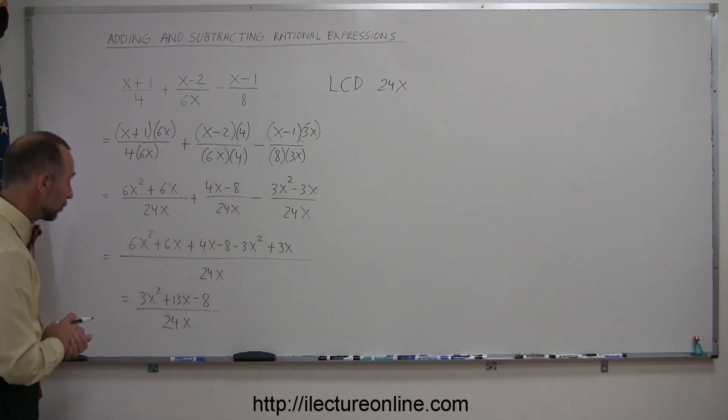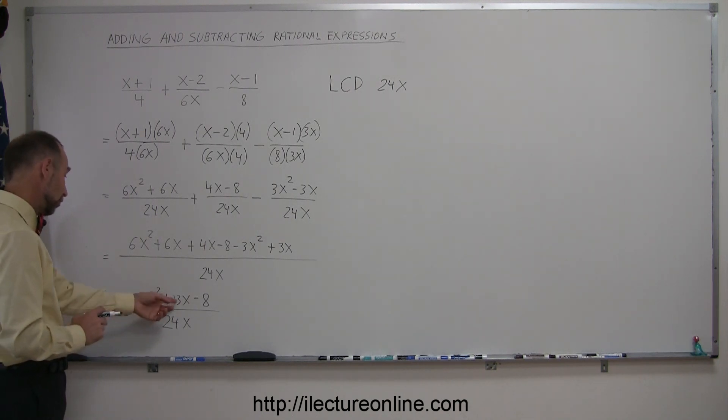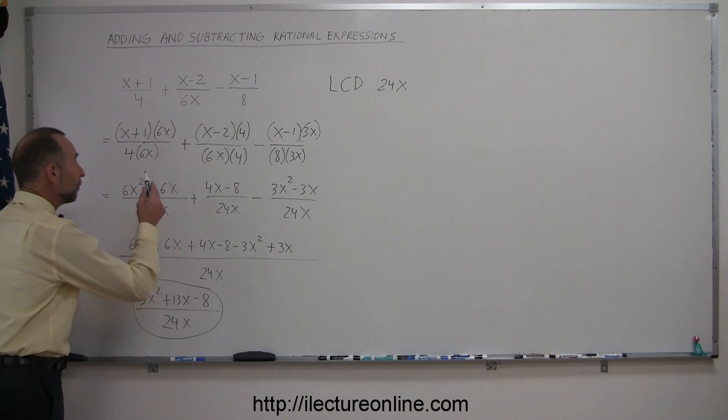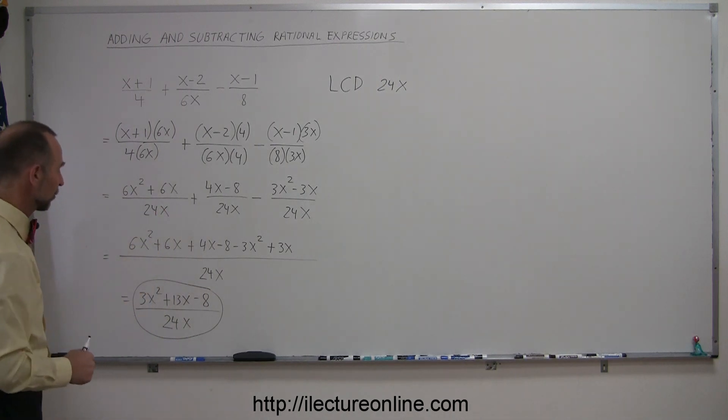Now, typically what you would like to do here is make sure you cannot factor anything out of the numerator or denominator. It looks like no, 13 is a prime number, and you cannot factor out an x, so that would then be the final answer, the most simplified form of the addition and subtraction of those rational expressions.